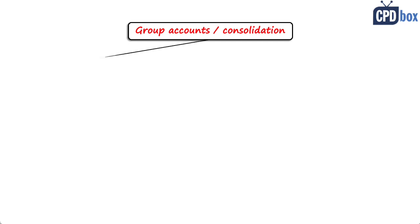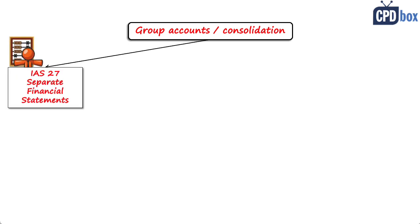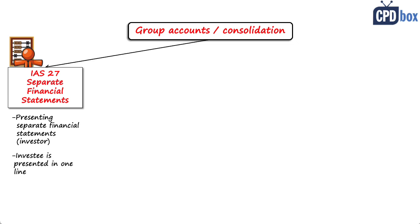The first one is IAS 27, Separate Financial Statements. This standard prescribes how the investor, parent company, or holding company shall present its investments in the individual or separate financial statements — basically in one line only. So this standard is not about consolidating, just telling us how we should show our investments in the separate financial statements.